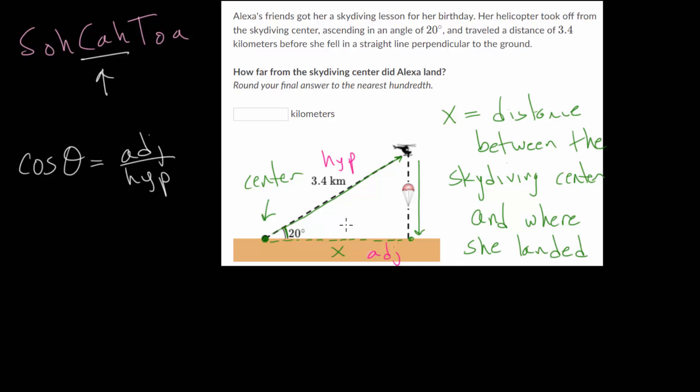So let's set this up using our numbers. We have that the cosine of 20 degrees is equal to the adjacent side, x, divided by this hypotenuse, which is 3.4. And we'll just assume our units are in kilometers, since that's what will go in the box here. So now we just need to solve this equation.